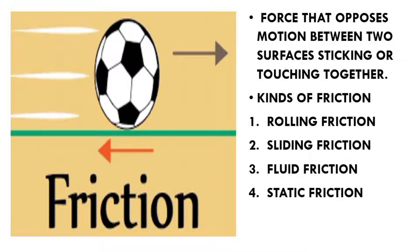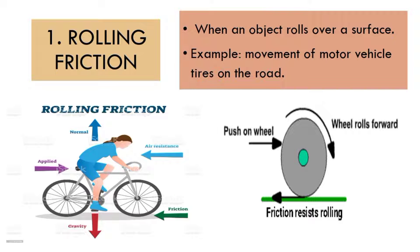Let us differentiate the four kinds of friction. First is rolling friction. When an object rolls over a surface, rolling friction occurs. Example: movement of motor vehicles and tires on the road.